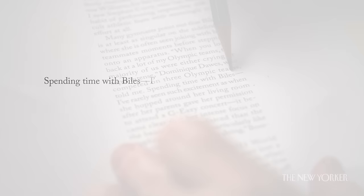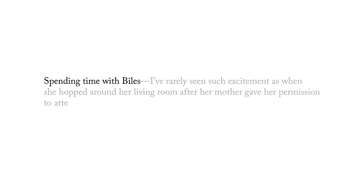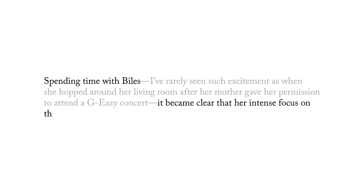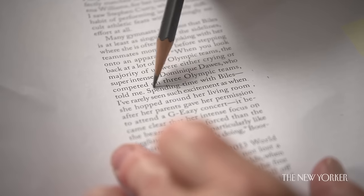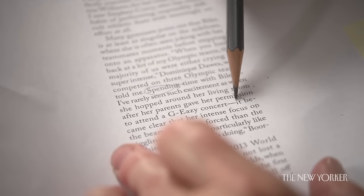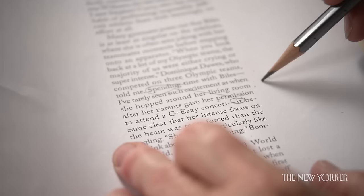On the same page, there's another example of a dangler: 'Spending time with Biles, it became clear that her intense focus on the beam was more forced than the giggling.' It was the same problem. 'Spending time with Biles' is a participial phrase, and it should modify the subject. And again, the subject is 'it became clear.'